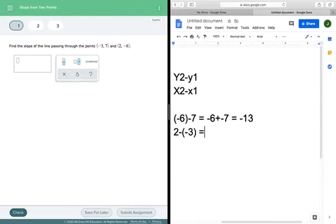On this one right here we have a double negative, so this minus a minus is going to become 2 plus 3, and that's going to be equal to 5. So if I did this right, my slope should be -13/5. Let's try this: -13 over 5. Look at that! Let's continue.